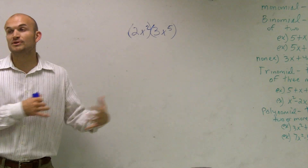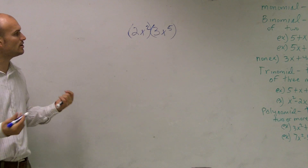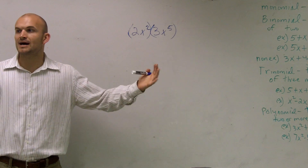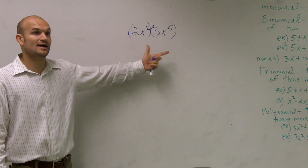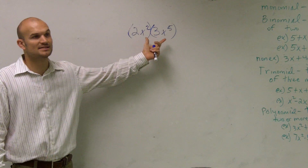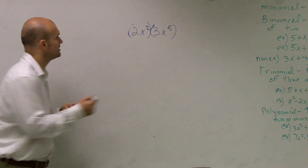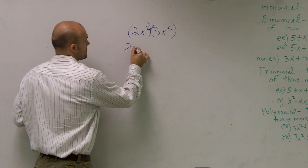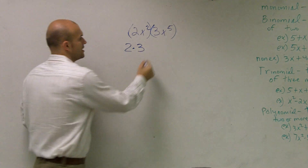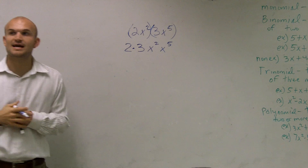So we have two monomials multiplied by each other. When we're multiplying monomials like this, the important thing you need to understand is you can only simplify the multiplication of monomials when they're like terms — meaning they have the same bases. Obviously we can multiply two times three. So I'll write two times three. Then we can also multiply x squared times x to the fifth, as those are like terms, meaning their bases are exactly the same.